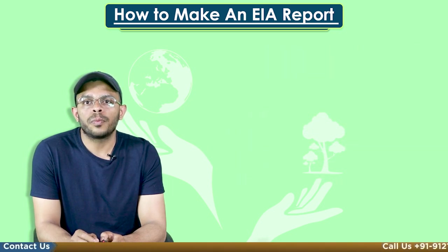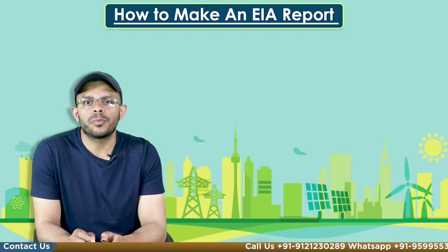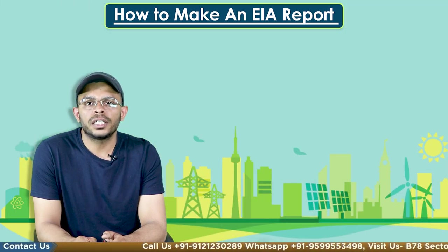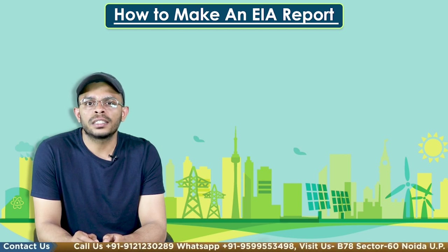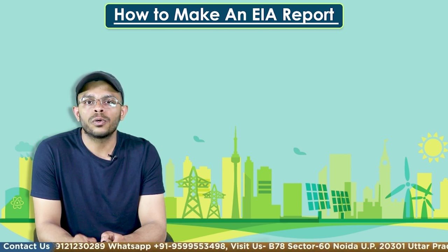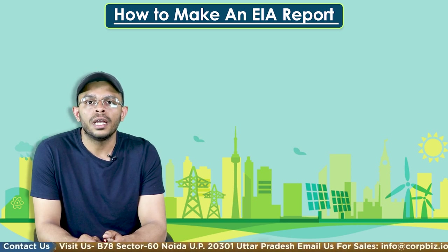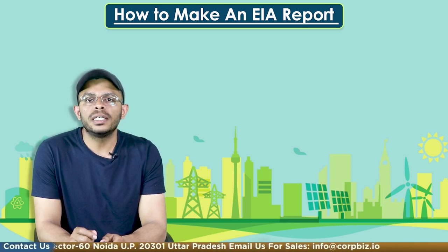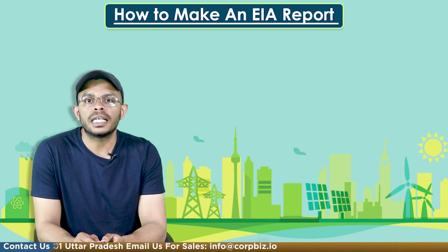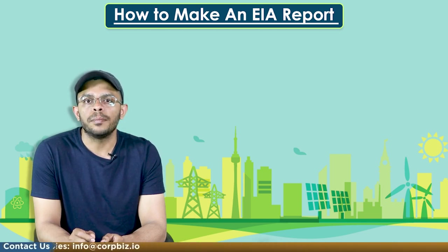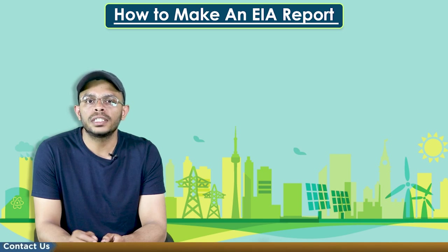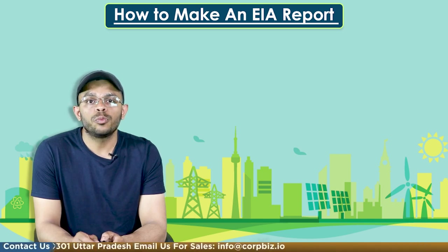When we talk about the composition of the above format, details like the project proponent's profile, contact information, and brief description of the project must be included. In this section, the details of the project such as its nature, size, location, and its significance to the country and the area must be mentioned. An action plan must be properly described in terms of existing national and international environmental laws. If any restrictions or limitations are imposed by the district administration, state, or the central government, they must also be included.